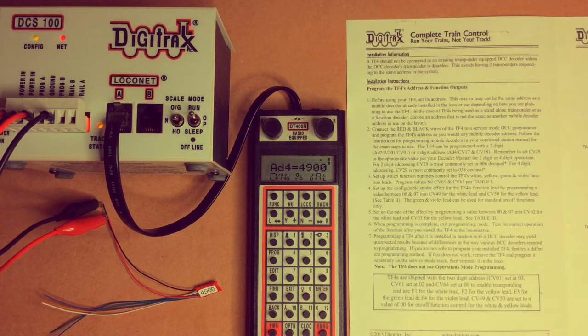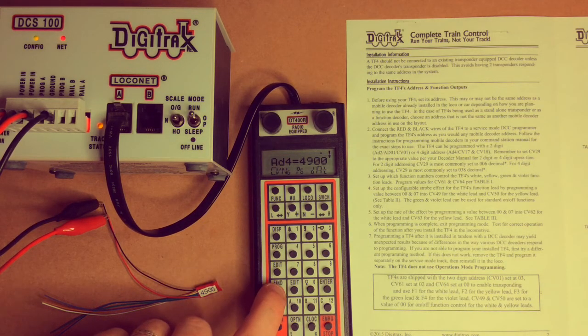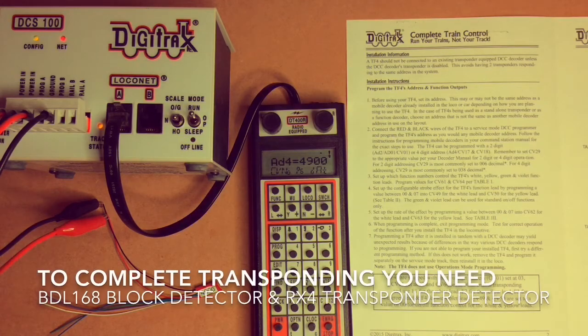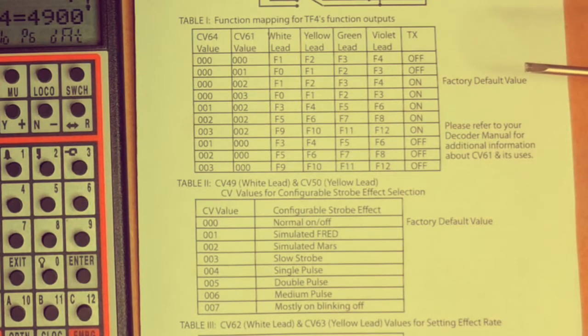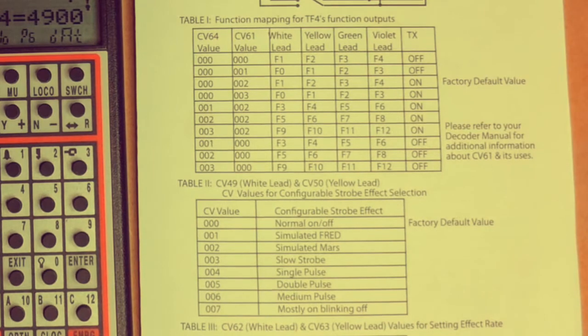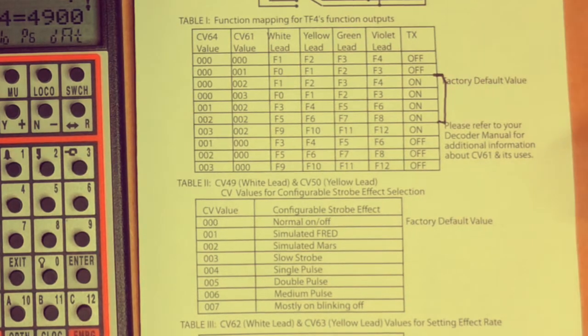Cabooses or brake vans are a piece of equipment I want to know where they are, and I can use the transponding Find button on here to find where on the layout it is, or via some software on the computer using a BDL168 block detector and an RX4 transponder. I'm going to put a video together on how they all go together and make that work. Let's look through here. What we do want is that we want our transponding on. What's different in this table is transponding represented by TX.